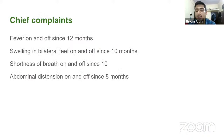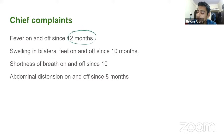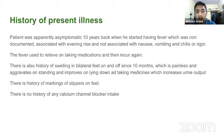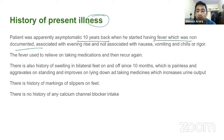We have a patient who came to our ward with chief complaints of fever on and off since 12 months, swelling in bilateral feet on and off since 10 months, shortness of breath on and off since 10 months, and abdominal distension on and off since 8 months. According to the patient, he was apparently asymptomatic 10 years back when he started having fever.